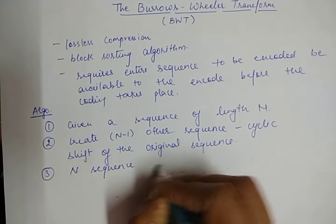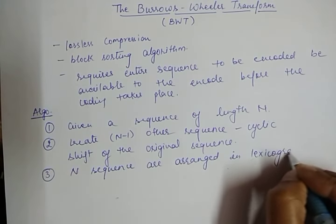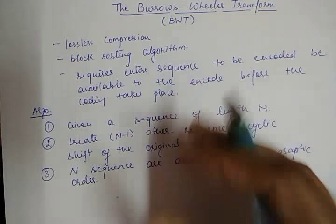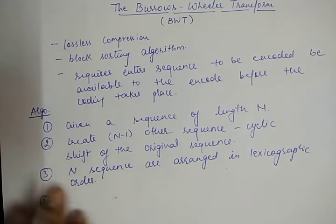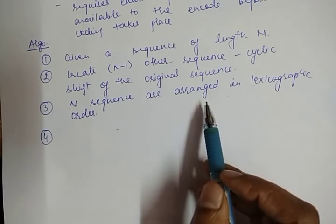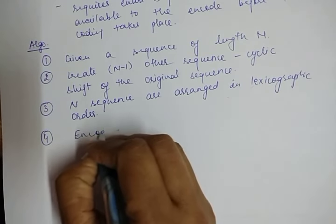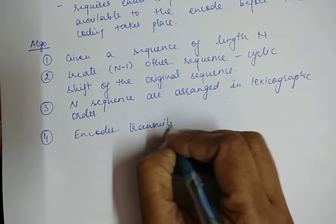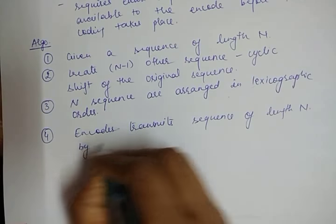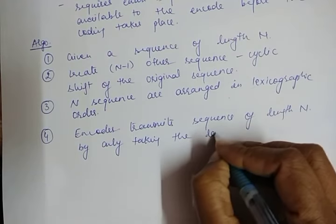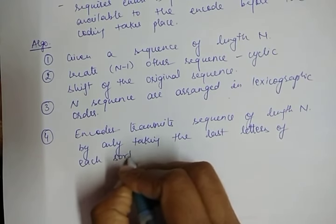The third step says these N sequences are arranged in lexicographic order. Lexicographic order means alphabetical order, in which special symbols come first, then A, B, C, and so on. The last step is: after arranging the N sequences in lexicographic order, the encoder transmits a sequence of length N by only taking the last letters of each sorted cyclic shift.